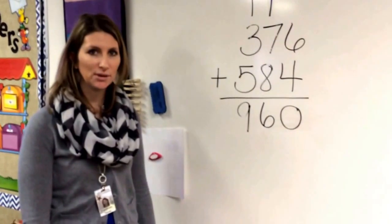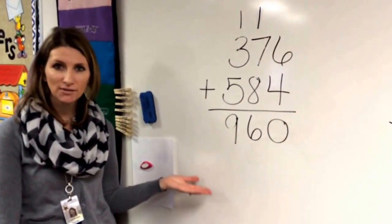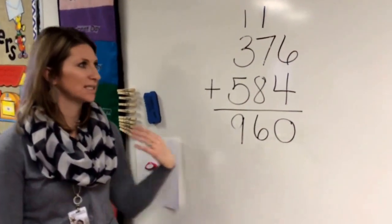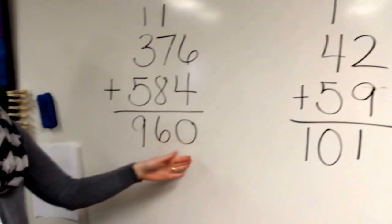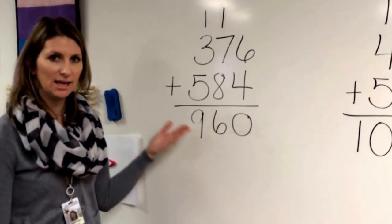So don't let the big numbers fool you. You just have to remember what we've learned so far. Remember that it's just like adding a two-digit number. You just take it column by column. Start with the ones, move to the tens, and then go to the hundreds.